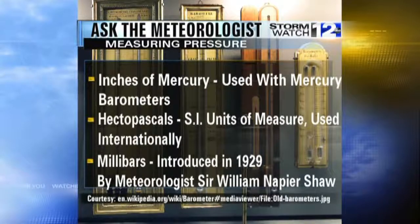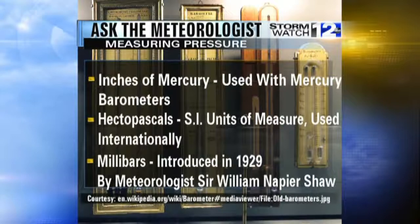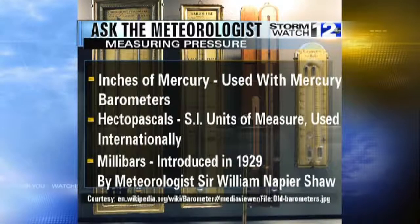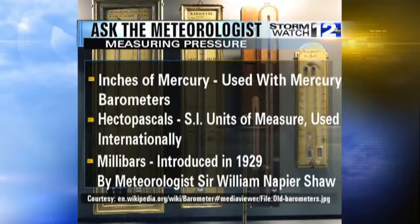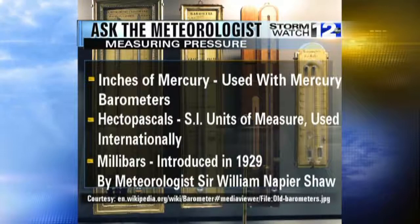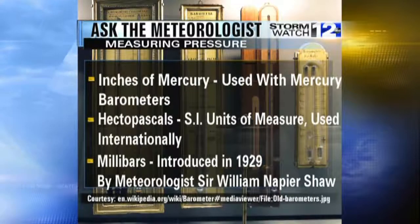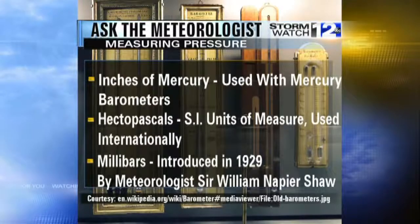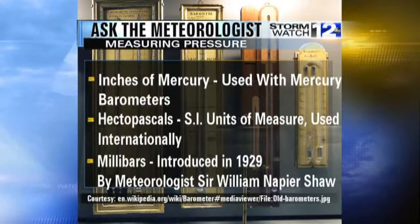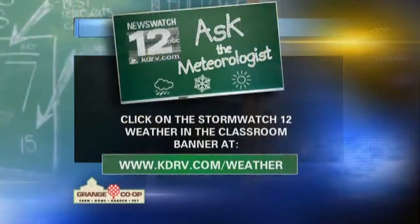Hectopascals and millibars convert exactly the same between each other. But we have been using millibars since around 1929 — it was introduced by a meteorologist. And so because we are creatures of habit, we just like millibars better than hectopascals, even though hectopascals convert just the same and is the SI unit of measure, as are kilograms, as are meters.